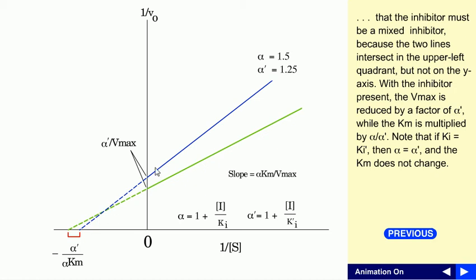The inhibited and uninhibited lines intersect not on the X-axis or Y-axis, but only in the upper left quadrant — this is the characteristic plot for mixed inhibition of an enzymatic reaction. Note that if Ki equals K'i, then α equals α' and Km does not change in that case.